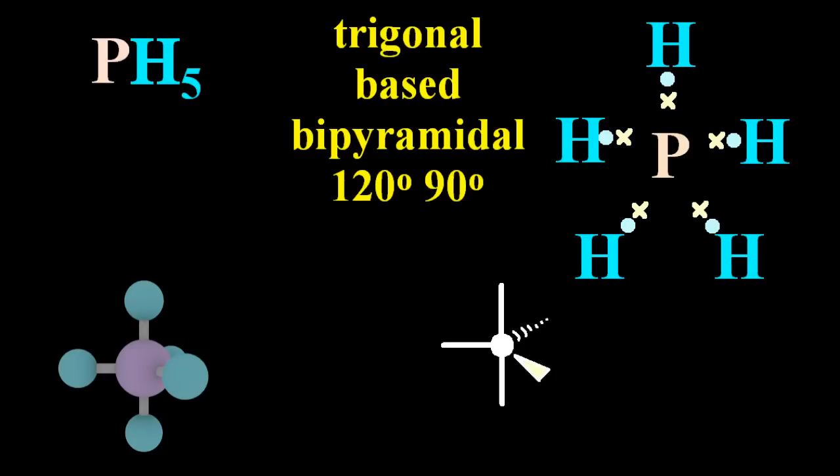The line that goes forward towards you, the wedge that comes out, is the atom coming towards you, and the dashed line that goes back is the atom going away from you.